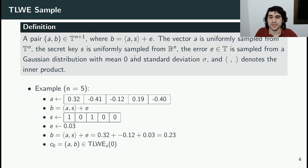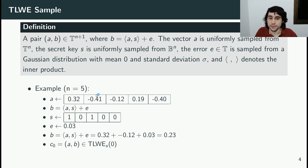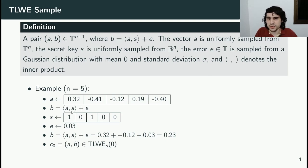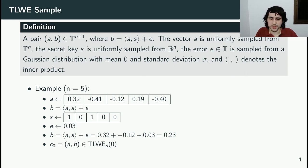A TLWE sample is a pair (A, B), where A is a vector of scalars in the torus, sampled from a uniform distribution — here we have an example with n equals 5. B is calculated using the equation where S is the secret key. TFHE uses a binary secret key. E is an error sampled from a Gaussian distribution with mean zero and standard deviation sigma. This sample we just generated is not encrypting anything, so we call it a sample of zero.